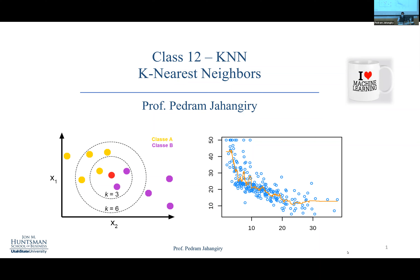Hello everyone, this is class number 12. We are going to cover K-Nearest Neighbors, KNN. This is one of the simplest yet powerful machine learning models out there, used extensively for classification and in some use cases for regression as well. Let me give you a big picture.